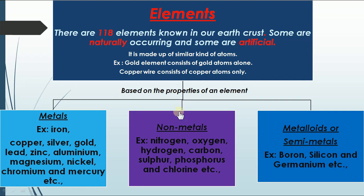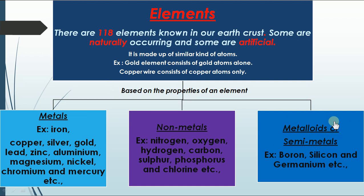We have categorized the elements into three types: metals, non-metals, and metalloids, based on their properties. The properties of metalloids are a combination of metals and non-metals.